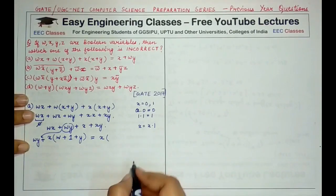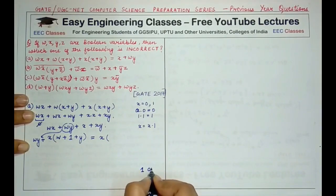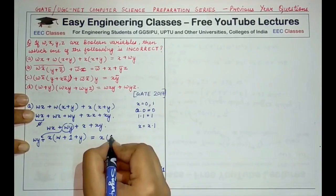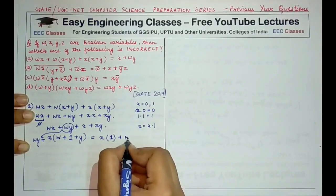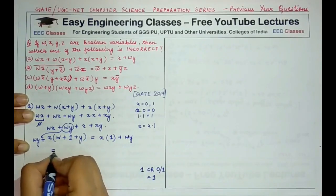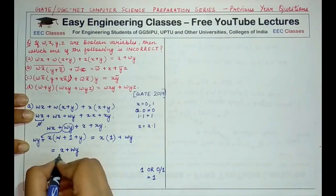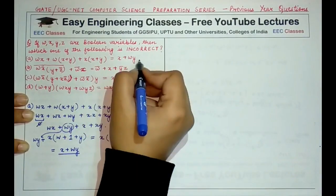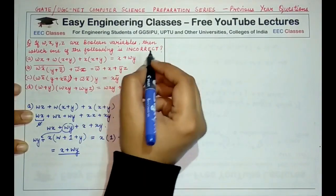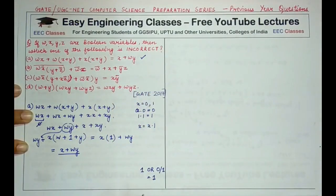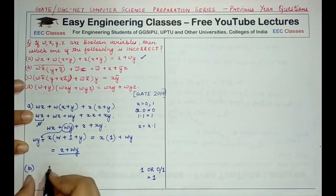Since 1 OR anything equals 1, the term (w + 1 + y) reduces to 1, giving x·1 = x. So the left hand side reduces to x + wy, which matches the right hand side. Option A is correct. Now let's proceed to option B.